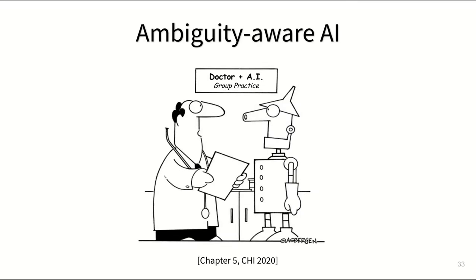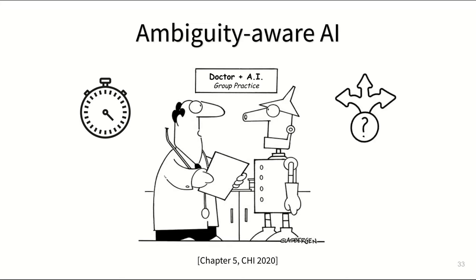Think about a scenario where an imperfect AI and a human work together to interpret and classify data in a time-sensitive workflow, meaning that given a limited time window, the human must prioritize which of the AI-provided assessments to double-check and potentially correct and which ones to simply trust blindly. Let's also assume that this classification task they are trying to accomplish together is ambiguous and full of expert disagreement.